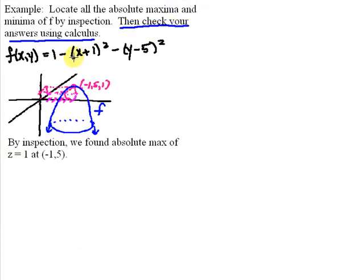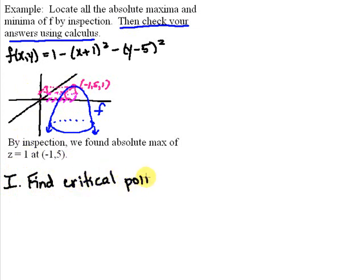We're going to solve this problem as if we didn't know where the maximum was going to occur, using the calculus facts that we've learned. For the first portion, we need to identify the critical points. Critical points occur by definition where the partials — the first order partials — are equal to zero.